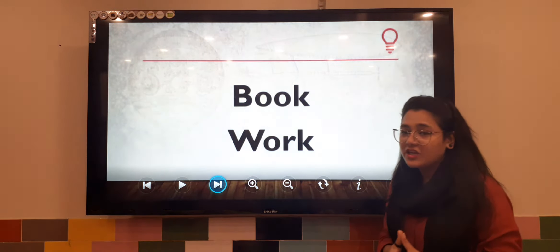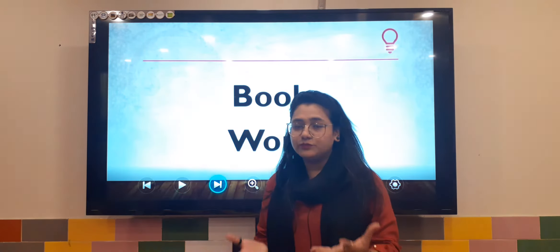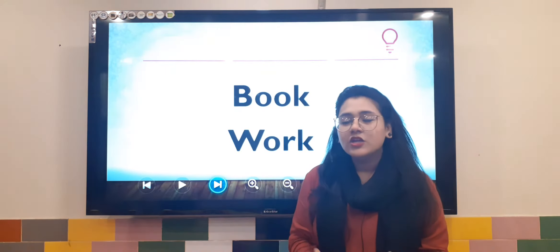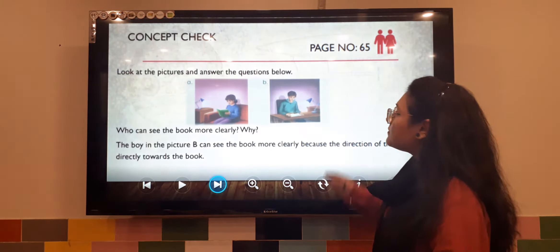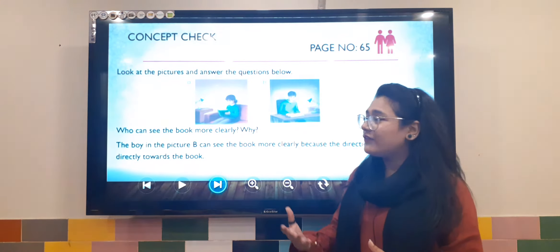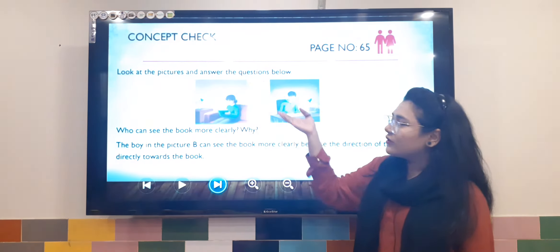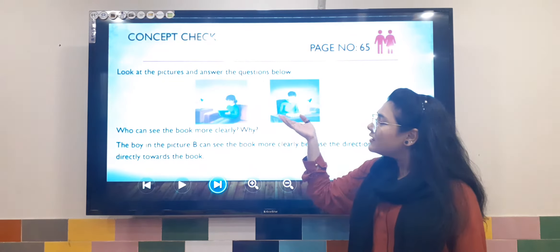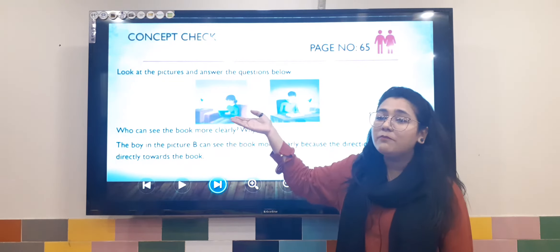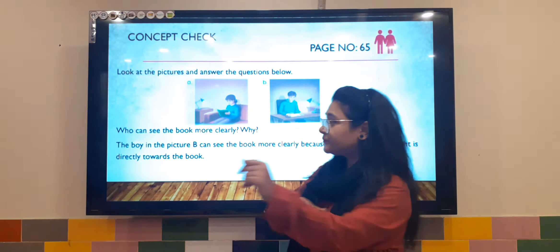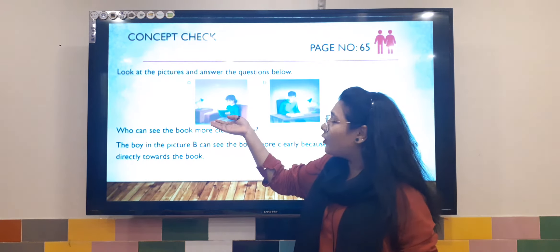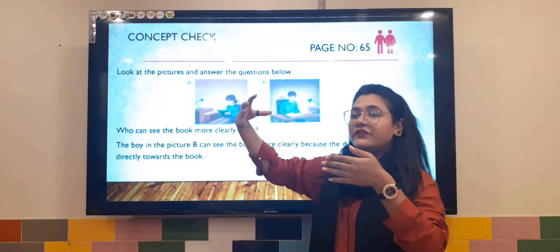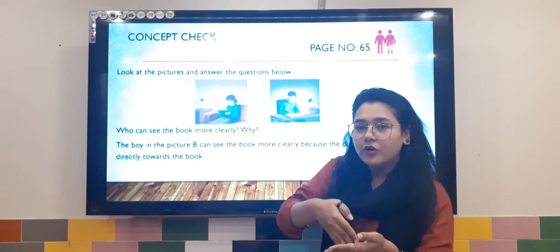My dear students, we have just completed the explanation of lights and shadows — how light moves, how shadows form, and other properties. Take out your books because we are going to start with the book work. The first one is concept check on page number 65, where you have to look at the pictures and answer which of the two — the girl or the boy — can see the book more clearly and why.